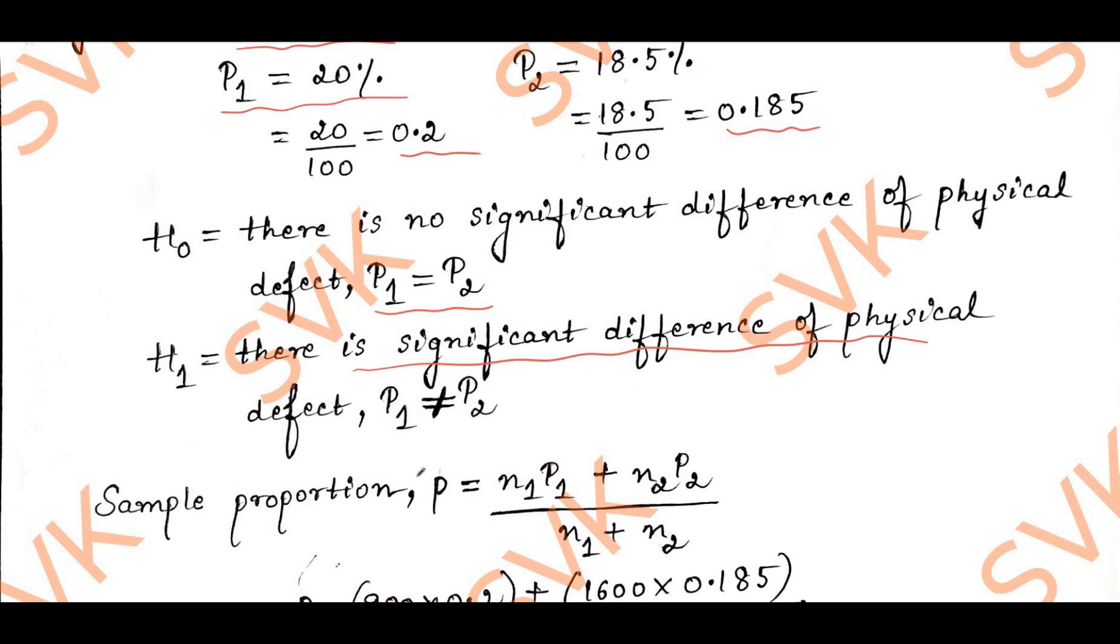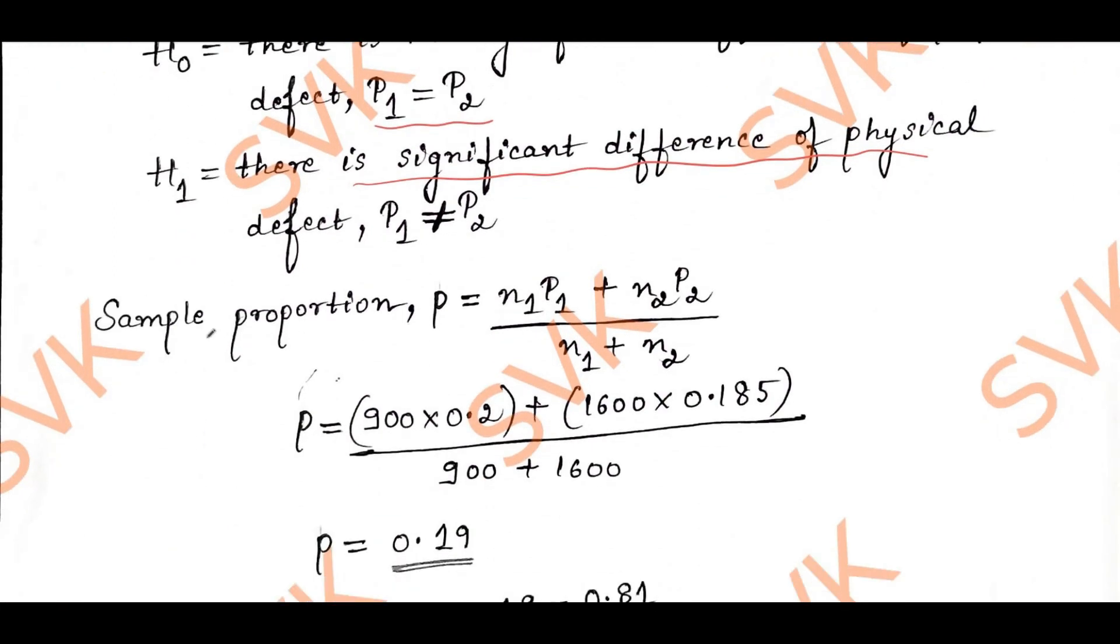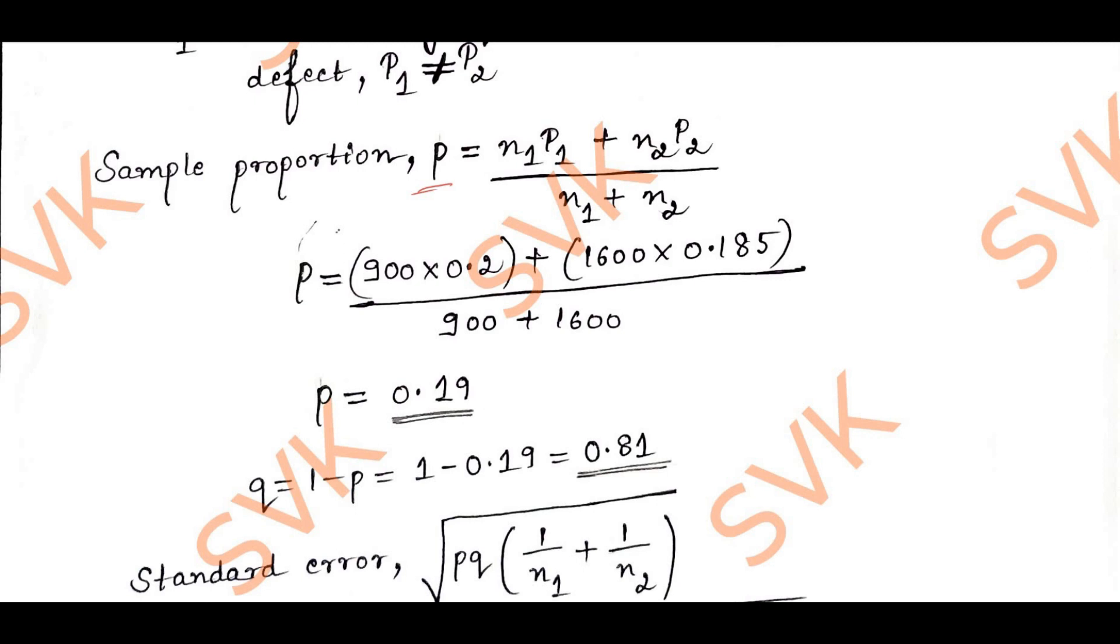I am going to find the sample proportion P given by N1P1 + N2P2 divided by N1 + N2. This formula will be given in your handbook. You can refer to that formula, substitute all the values N1P1, N2P2, and simplify to get the value of P.